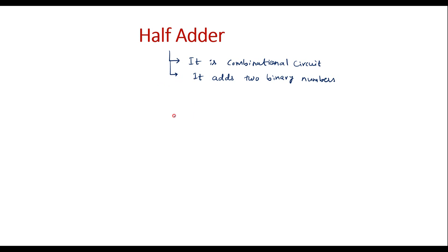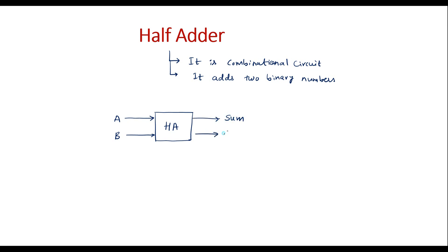Let me draw the block diagram of half adder. This is the half adder block. It takes two binary bits — let A and B be the two binary bits, where A is 0 or 1 and B is 0 or 1. It produces two outputs: sum and carry. These are the inputs, and these are the outputs.